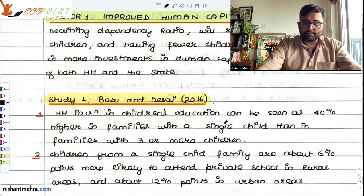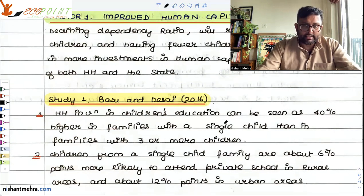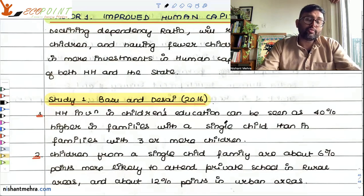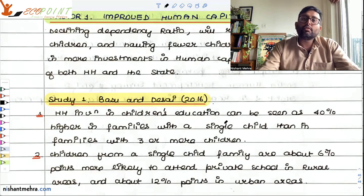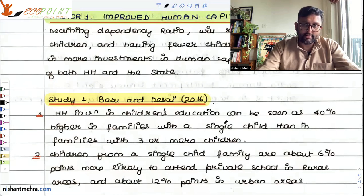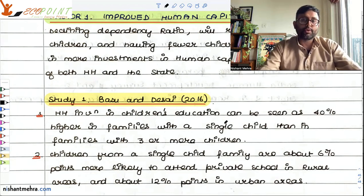There are a few studies which have been done. One study by Basu Vendisai, 2016, says that families with a single child invest 40% more in children's education compared to families who have two to three children. So investment in children's education is proportional to the number of children in the family — fewer children means more investment. Children from a single-child family are about 6% more likely to attend private school in rural areas and 12% more in urban areas.